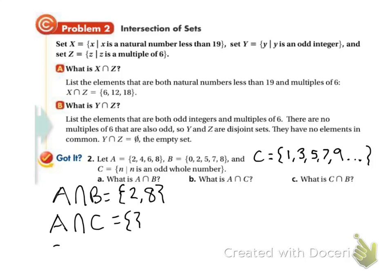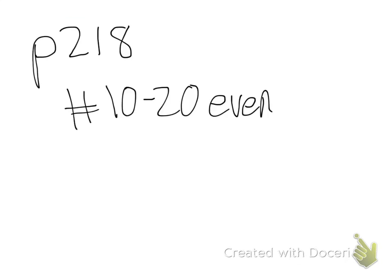And then what is the union of C and B? So they share the number 5 and 7. And that's it. There's your homework.